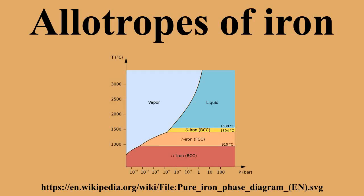These are alpha-iron (ferrite), gamma-iron (austenite), and delta-iron. At very high pressure, a fourth form exists, called epsilon-iron hexaferrum.